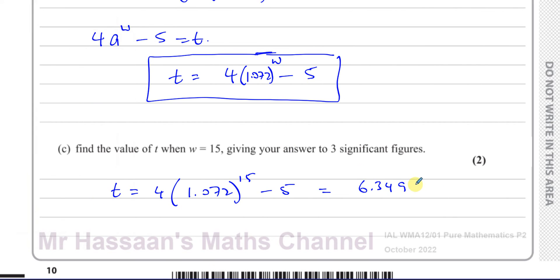And it says 3 significant figures. So that's 6.35. Okay. That's the value of t.